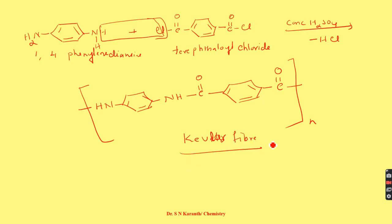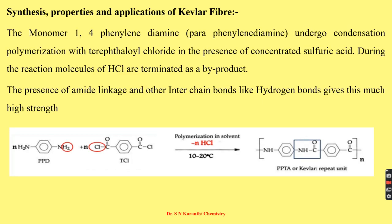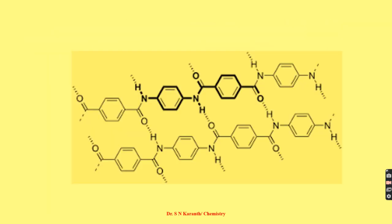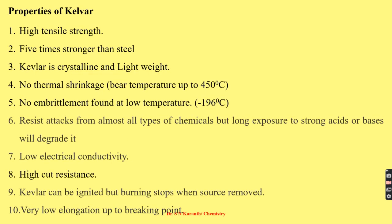The Kevlar fiber is mixed with other polymer units to form a polymer composite. In the reaction, 1,4-phenylenediamine undergoes polycondensation with terephthaloyl chloride to give Kevlar fiber. In the Kevlar structure, the NH group of one polymer chain is bound to the carbonyl group of another polymer chain by means of hydrogen bonding, which contributes significantly to the strength of the material.